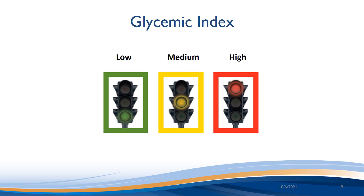High GI foods are foods we should choose least often, or stop and think about. They include foods like white bread, rice krispies or corn flakes, pretzels, rice cakes, and soda crackers.